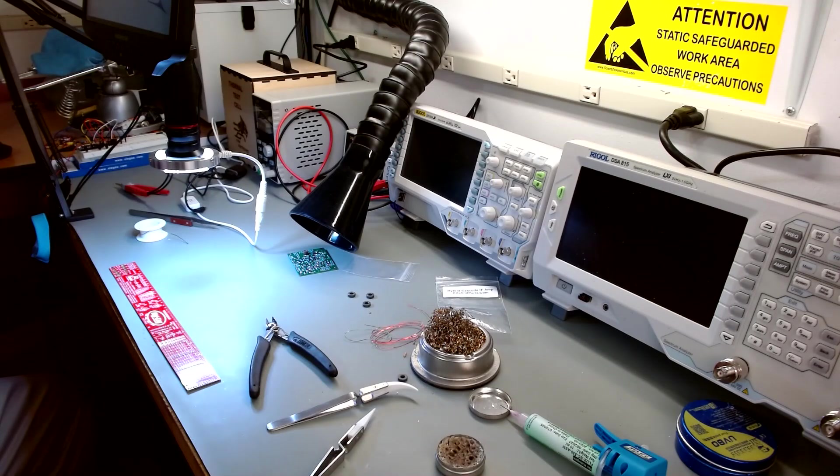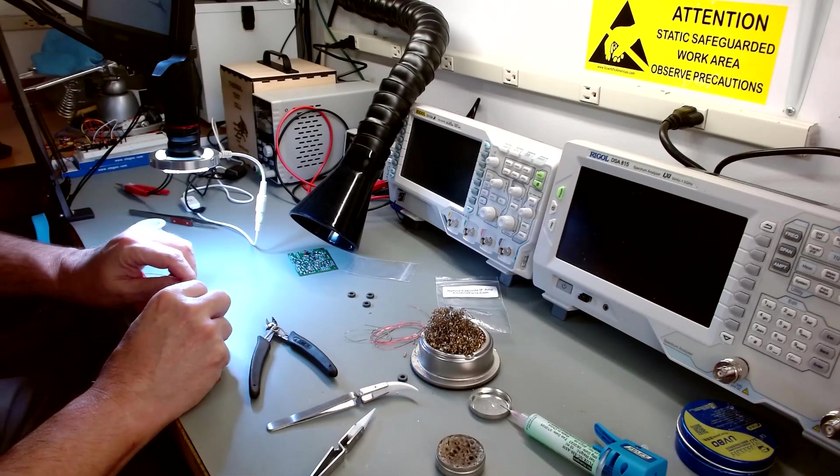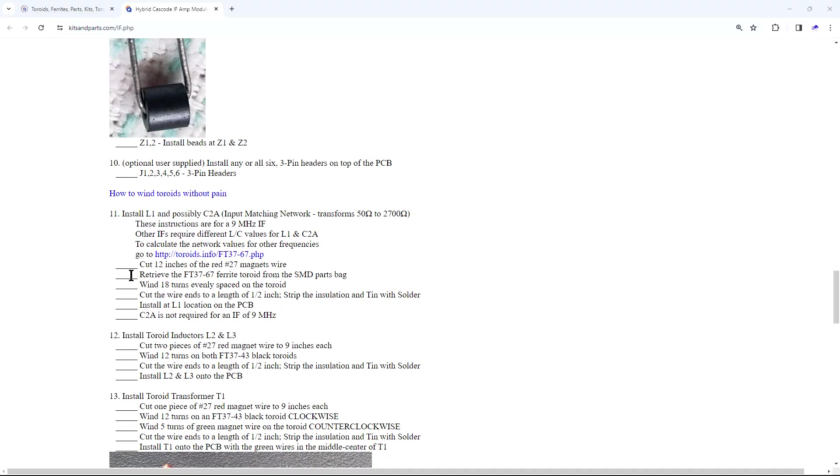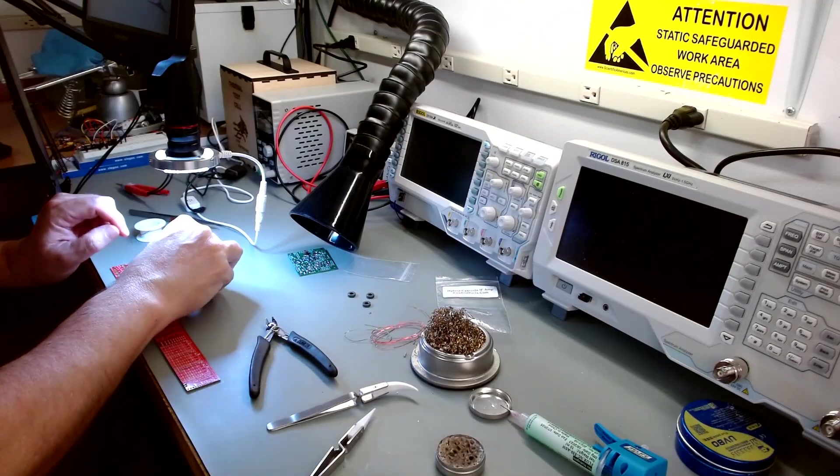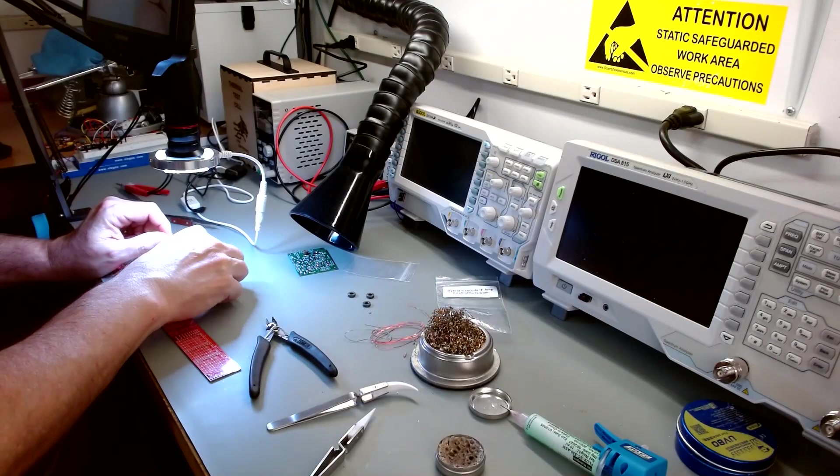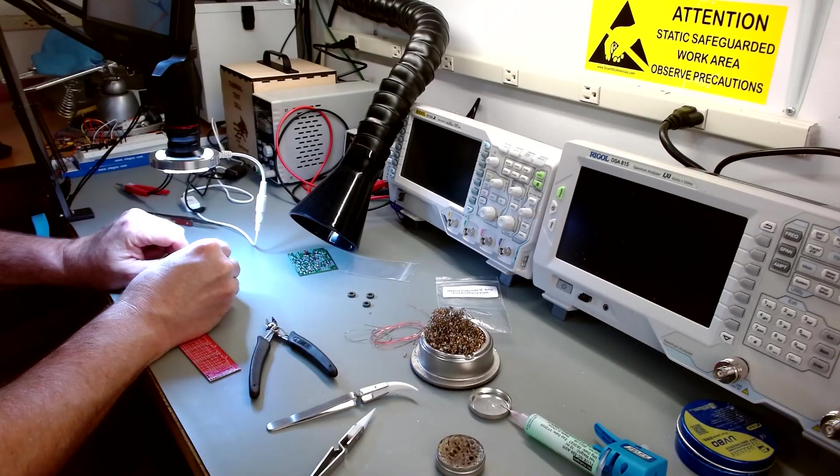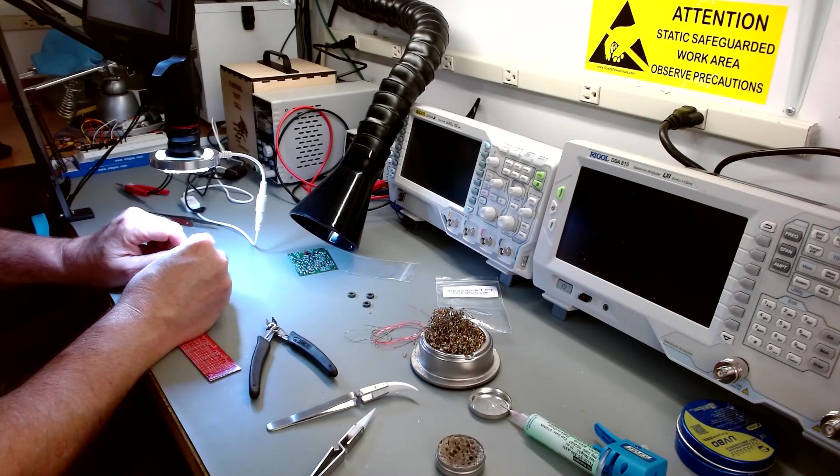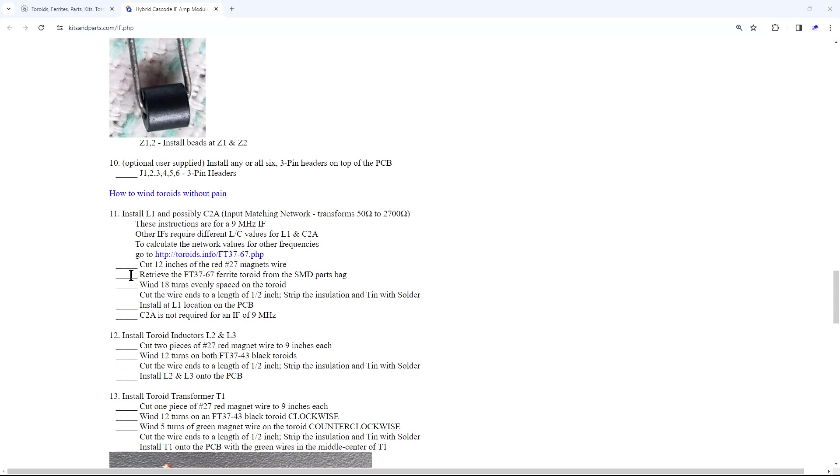Okay, so we've got a 12 inch ruler from DigiKey, those PCB ones they give you if you buy lots of stuff from them. And it'll work just fine. So we've measured 12 inches and we're going to cut that. And it says retrieve the FT 3667 ferrite from the SMD kit. So that's going to be the odd man out. This was the one that was in the bag. The others were separate.